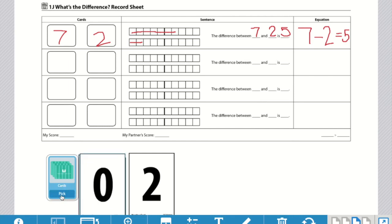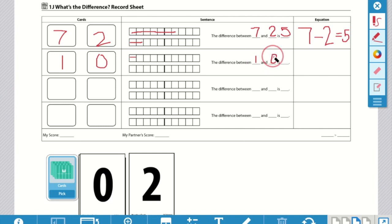Partner one will continue. Pick two cards. One and zero. Mark it. The difference between one and zero. This was easy. One. One minus zero equals one.